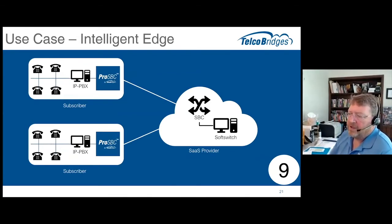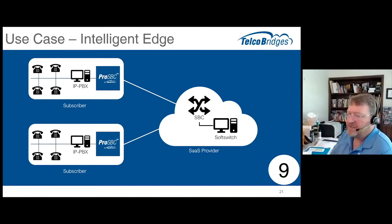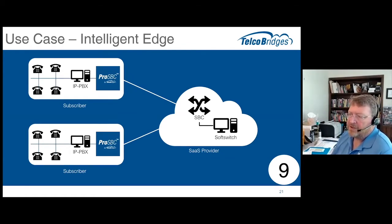When you put an SBC in a network, a lot of folks think in terms of — well, this sits in the cloud, it sits in the service provider core. In a lot of cases, it does. There's the session border controller in the core of the network, generally protecting or managing, working with a soft switch. In this case, they want to be able to move some of the intelligence — some of the routing logic or traffic, or any one of a number of other functions — out to the branch office or to the subscriber.